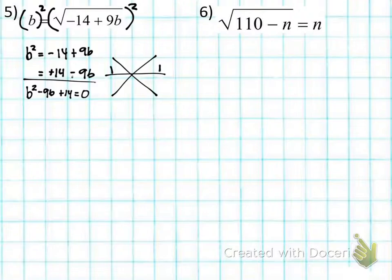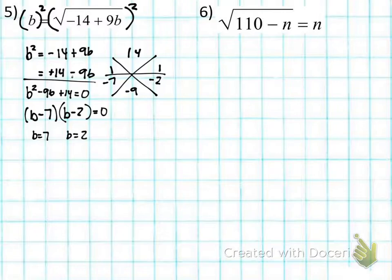7 and 2 are the correct answers here. Xbox, of course, we have factors that multiply to be positive 14, but it adds up to negative 9. It's negative 7, negative 2. So you've got B minus 7 times B minus 2 equals 0, and of course, B is equal to 7, and B is equal to 2. And are any of these extraneous? Did you check? Yeah, they're not extraneous. Good.